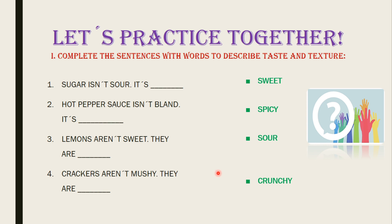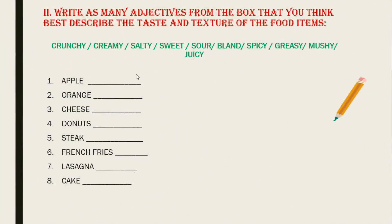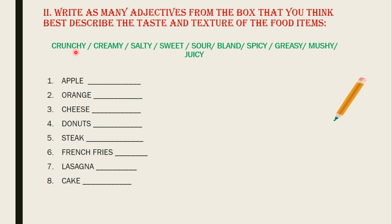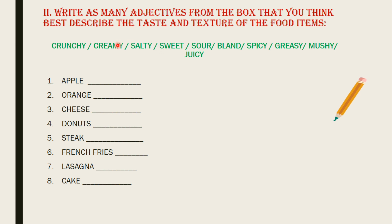Very good, guys. Next part: write as many adjectives from the box that best describe the taste and textures of the food items. We have a chart with all the words about tastes and textures: crunchy, creamy, salty, sweet, sour, bland, spicy, greasy, mushy, and juicy. We have to work with all these words for this exercise.